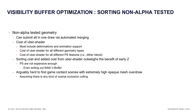We also tried sorting of non-alpha-tested geometry using a single Uber shader via automated merging, but found that sorting costs and added costs from the Uber shader outweigh the benefit of early Z. Prepass pixel shaders are just not expensive enough to guarantee the cost would be worthwhile. Furthermore, it is hard to find game content scenes with extremely high opaque mesh overdraw assuming any kind of coarse occlusion culling exists, making this technique less useful for non-alpha-tested geometry.